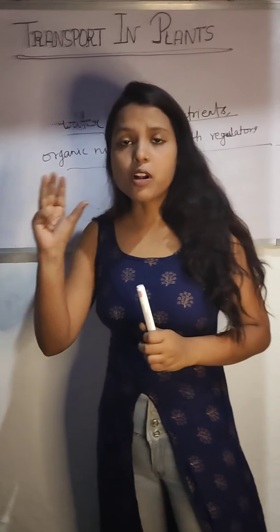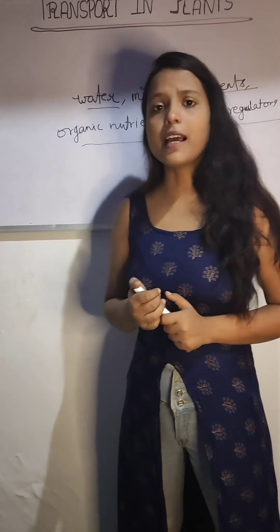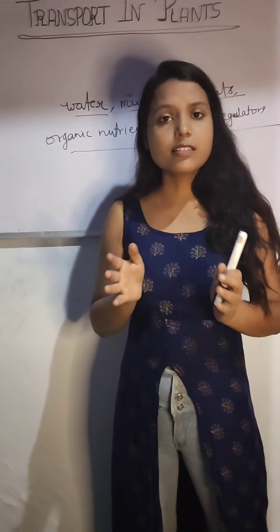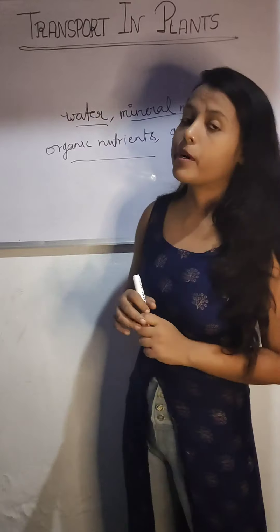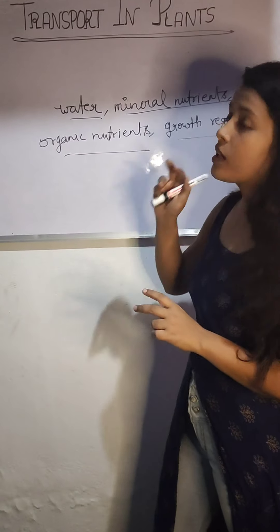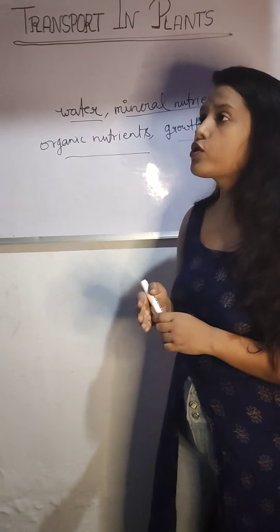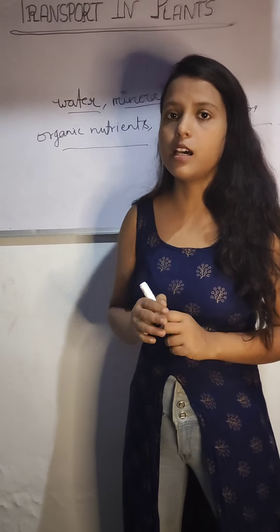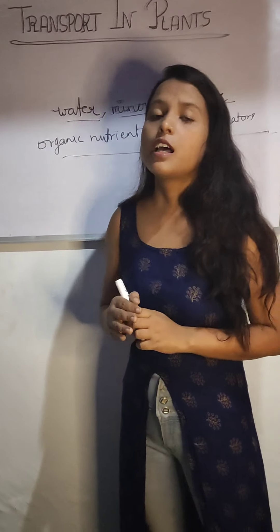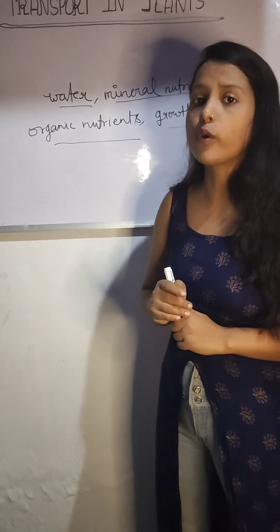For short distance transportation, diffusion and cytoplasmic streaming are used. What diffusion and cytoplasmic streaming are, I will discuss later. But for long distance transport in a flowering plant, the vascular bundle or vascular system is used. Such kind of transportation is also known as translocation.